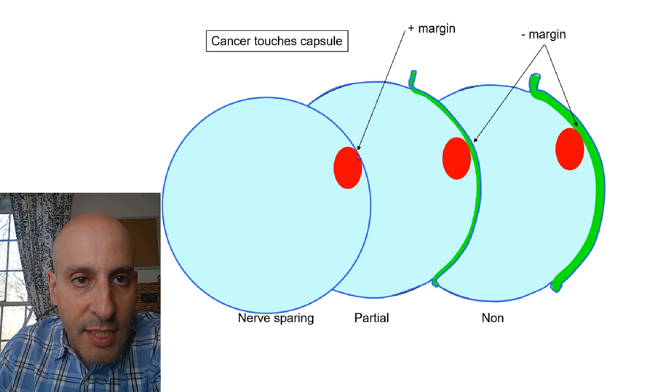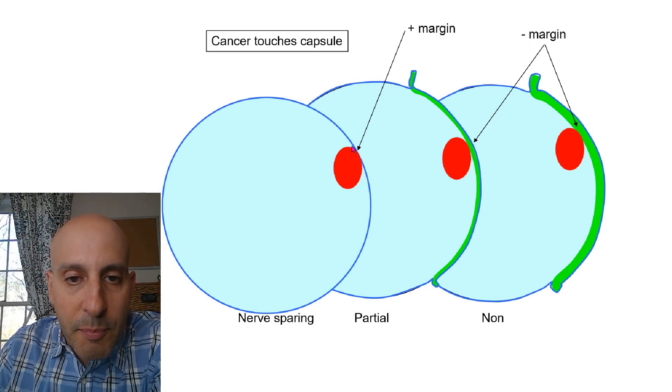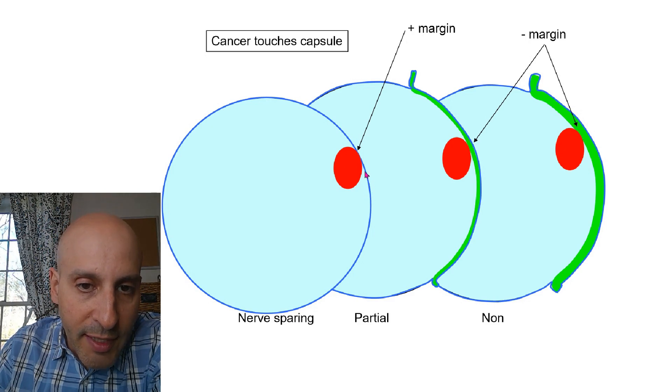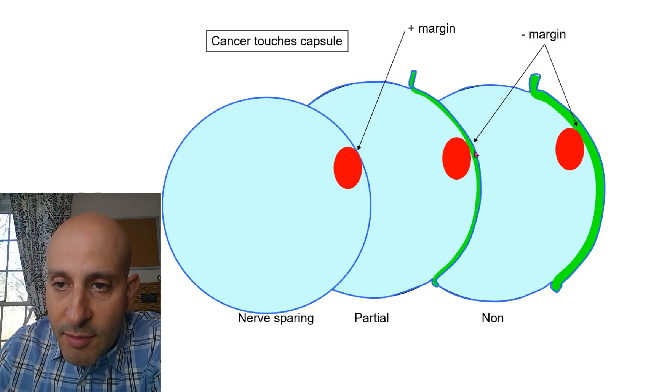If the biology of the cancer was that it touched the capsule of the prostate, if the surgeon did a nerve sparing, the margin will be positive, meaning cancer touches blue. If a partial nerve sparing or non-nerve sparing, the margin will be negative. Cancer doesn't touch blue.